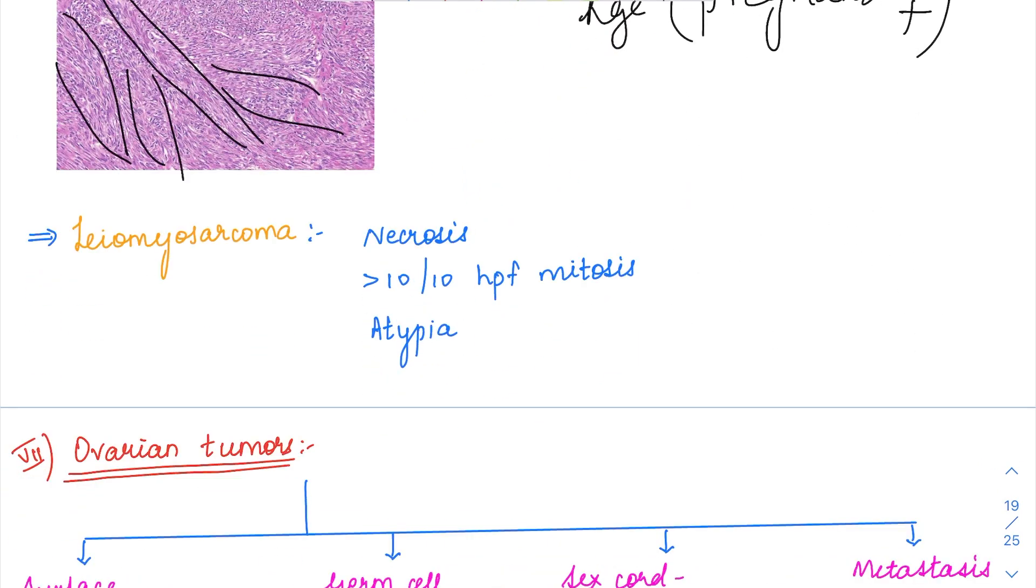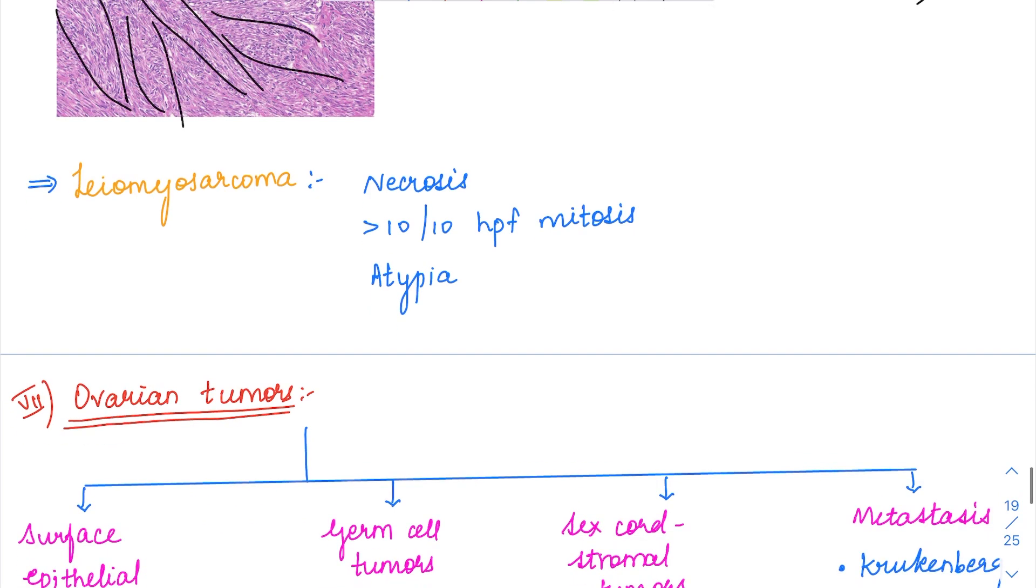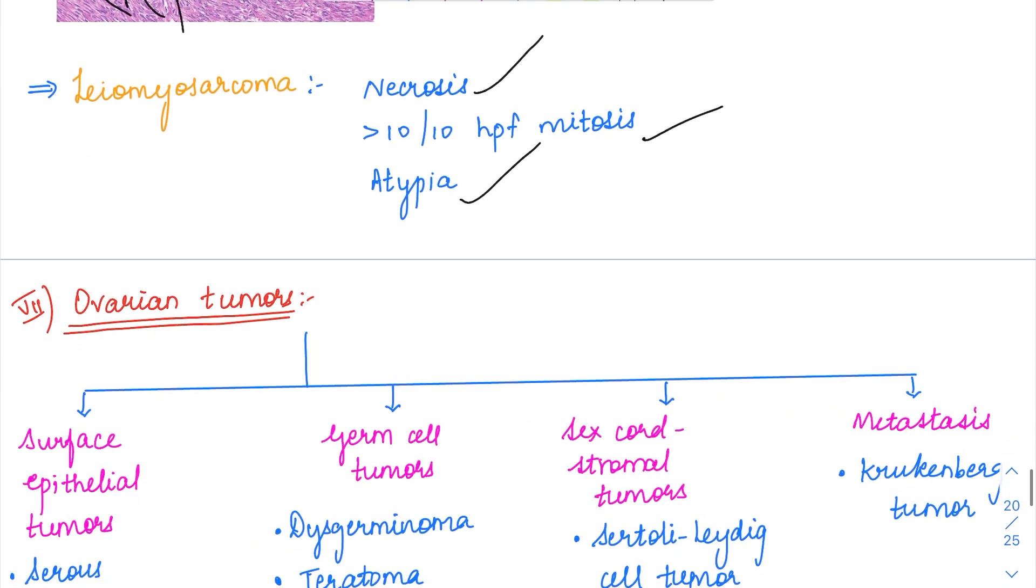When do you call it a leiomyosarcoma? Leiomyoma is benign while leiomyosarcoma is malignant. When you observe necrosis, atypia, or increased mitosis (more than 10 per 10 high-power fields), you can label it as a leiomyosarcoma.